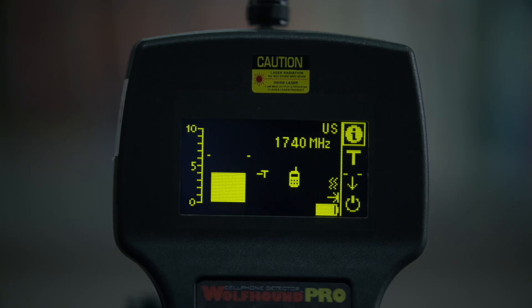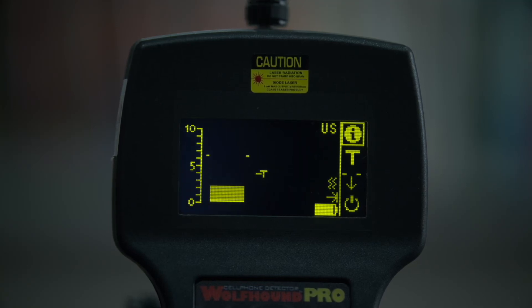In this video we are going to talk about using the Wolfhound Pro in a prison environment. The Wolfhound Pro detects cell phones when they make a phone call, send a text message, or when a cell phone registers with the tower it sends out a beacon or pulse.